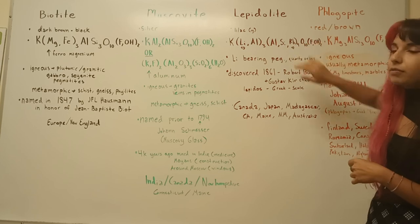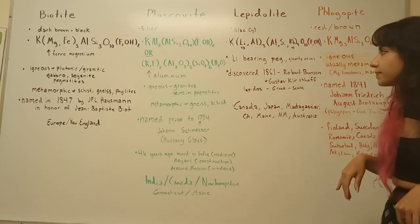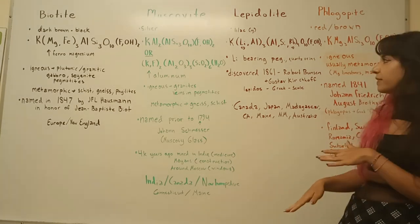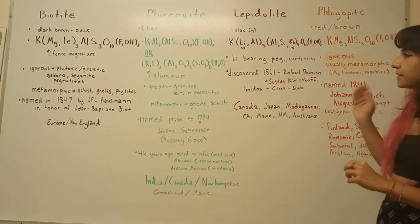It also has rubidium, which is pretty rare. You can find lepidolite in lithium-bearing pegmatites, some quartz veins, overall pretty similar trend.